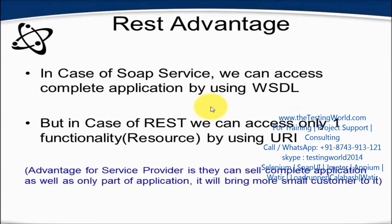In the case of SOAP services, we can access the complete application using WSDL — if I want to buy any web service I have to buy the complete application, because in SOAP we cannot access each and every functionality. But in the case of REST, we can access each and every functionality — we call it a resource — by using a URI.